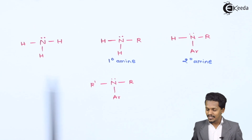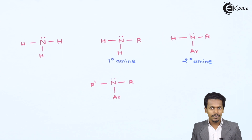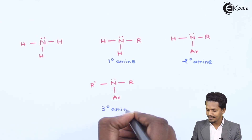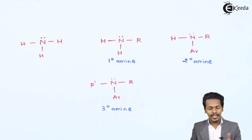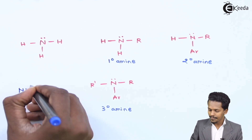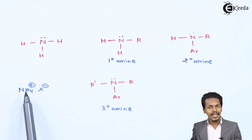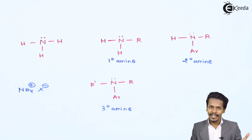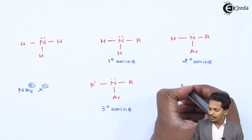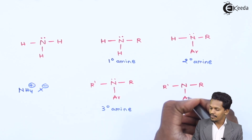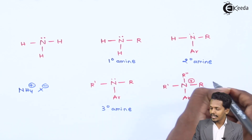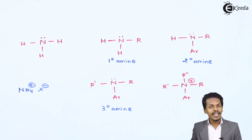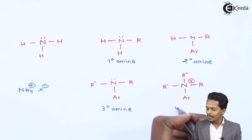When all three hydrogen atoms are replaced by alkyl or aryl groups, or a combination of both, that is known as a tertiary amine. The fourth type is quaternary amine, also called a four-degree amine. Starting from ammonium salt NH4X⁻, if all four hydrogen atoms are replaced by alkyl or aryl groups, the product — N with R, R′, an aromatic ring, and R″ — is known as a quaternary amine.